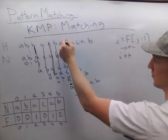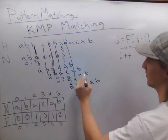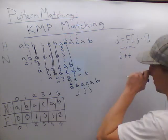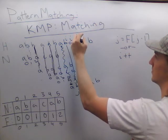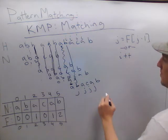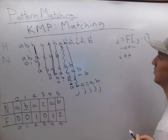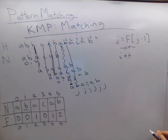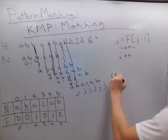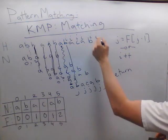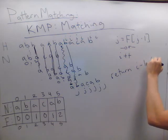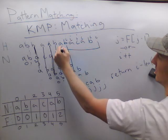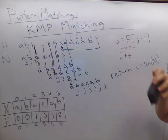Continuing, b and b match, increment both. a and a match, increment. c and c match, increment. a and a match. b and b match, increment, and now j is outside of the string. So if we return i minus the length of the needle, we can see that's the index at which we can find our needle inside the haystack.